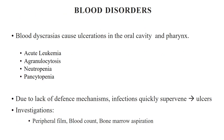Blood disorders cause ulcerations in the oral cavity and pharynx. Conditions like acute leukemia, agranulocytosis, neutropenia, and pancytopenia can all present with oral ulcerations due to lack of defense mechanisms. Infections quickly supervene, leading to ulcers. Investigations should include complete blood count, peripheral film, and bone marrow aspiration.